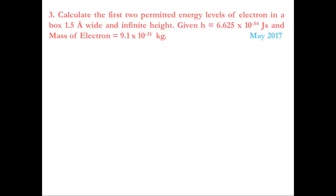Now let us solve problems on a particle in a one-dimensional infinite square well potential. Calculate the first two permitted energy levels of an electron in a box of 1.5 angstrom wide and infinite height. Given h = 6.625×10⁻³⁴ J·s and mass of electron = 9.1×10⁻³¹ kg.